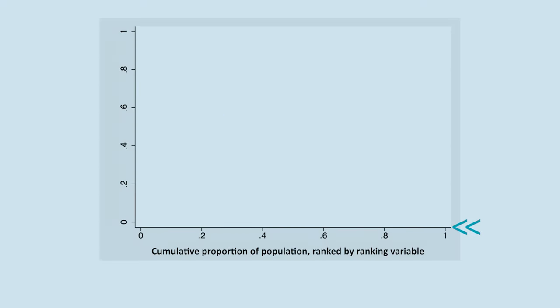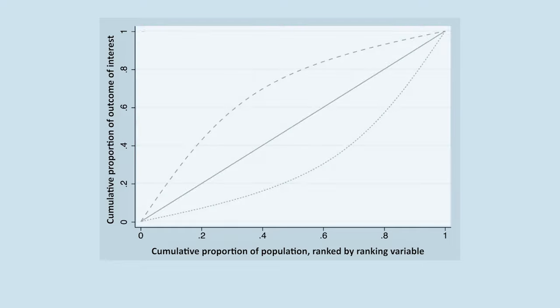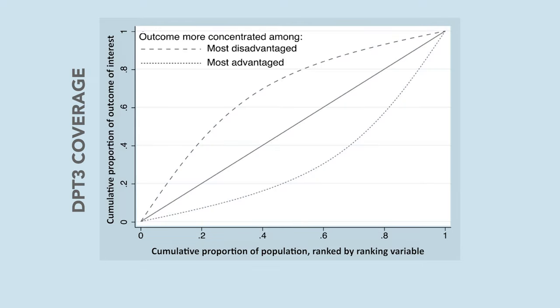Let's take a look at the graph for a clearer understanding. The X axis takes our ranking variable — the wealth quintiles — while the Y axis takes our outcome, which for the sake of this example is going to be DPT vaccine coverage. In the plotting area, we can see a diagonal straight line that crosses our graph. This is the equality line. It means that if there is absolutely no inequality, the outcome will be evenly distributed throughout the entire population.